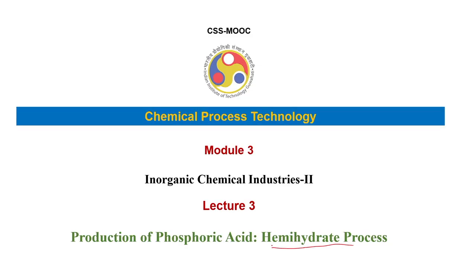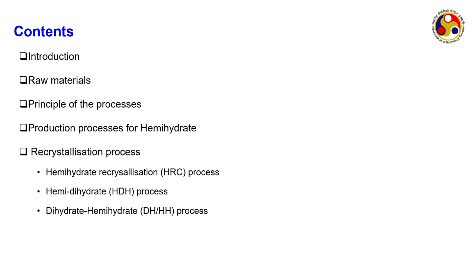There are also certain methods where you convert hemihydrate to dihydrate, or dihydrate to hemihydrate, based on the type of phosphatic ores. In today's lecture we will see the hemihydrate process in general. I will introduce the hemihydrate process — we have already covered phosphoric acid production. The raw materials remain the same as the previous lecture, that is the phosphatic ores.